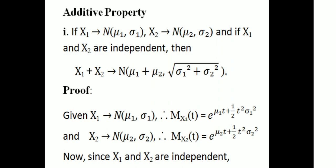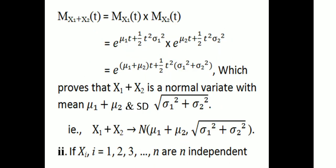Proof. Given X1 follows normal distribution with μ1 and σ1. Therefore, Mx1(t) = e raised to μ1·t plus half t squared σ1 squared. Similarly, X2 follows normal distribution with μ2 and σ2. Therefore, Mx2(t) = e raised to μ2·t plus half t squared σ2 squared. Then, since X1 and X2 are independent, Mx1+x2(t) = Mx1(t) × Mx2(t).